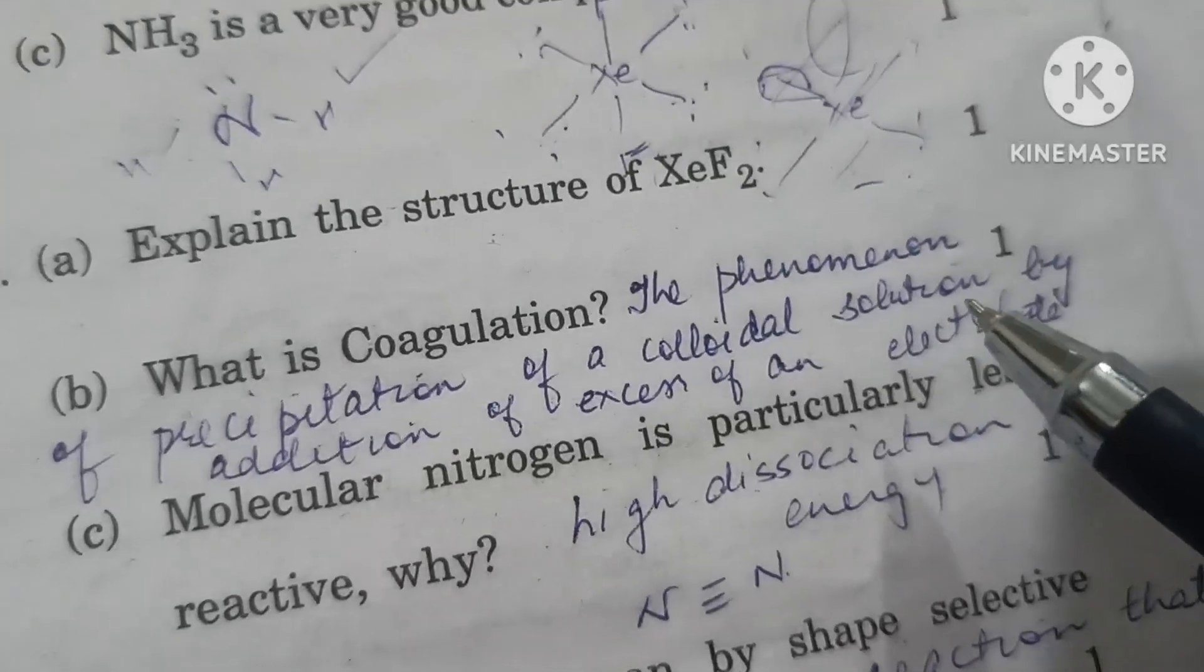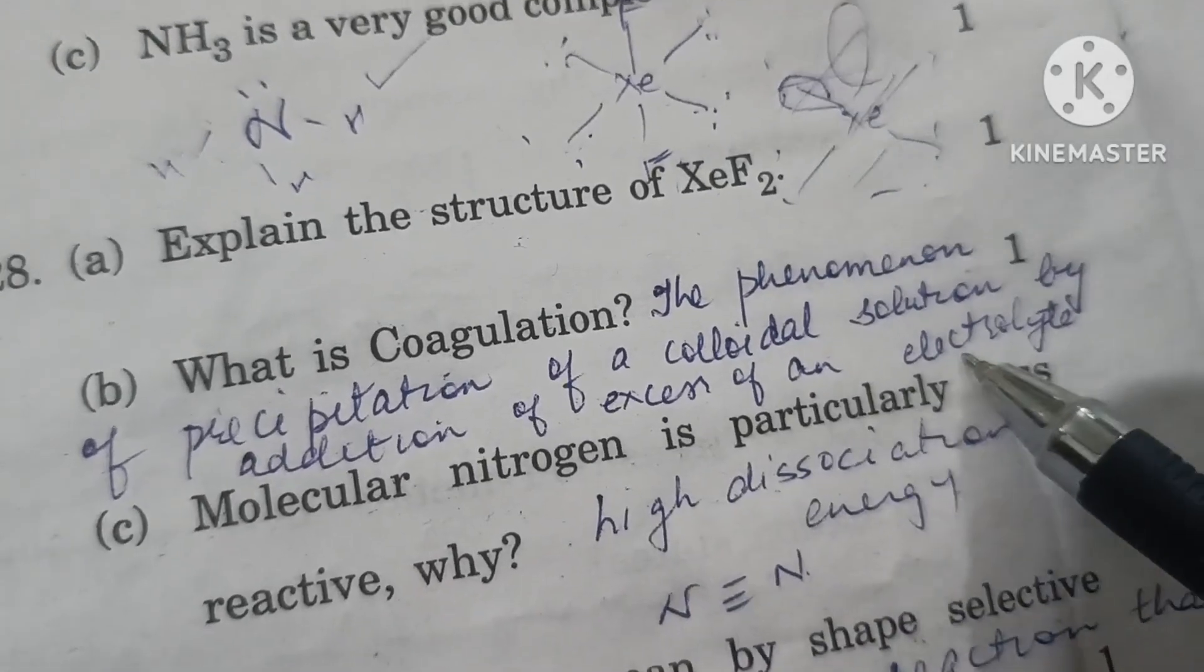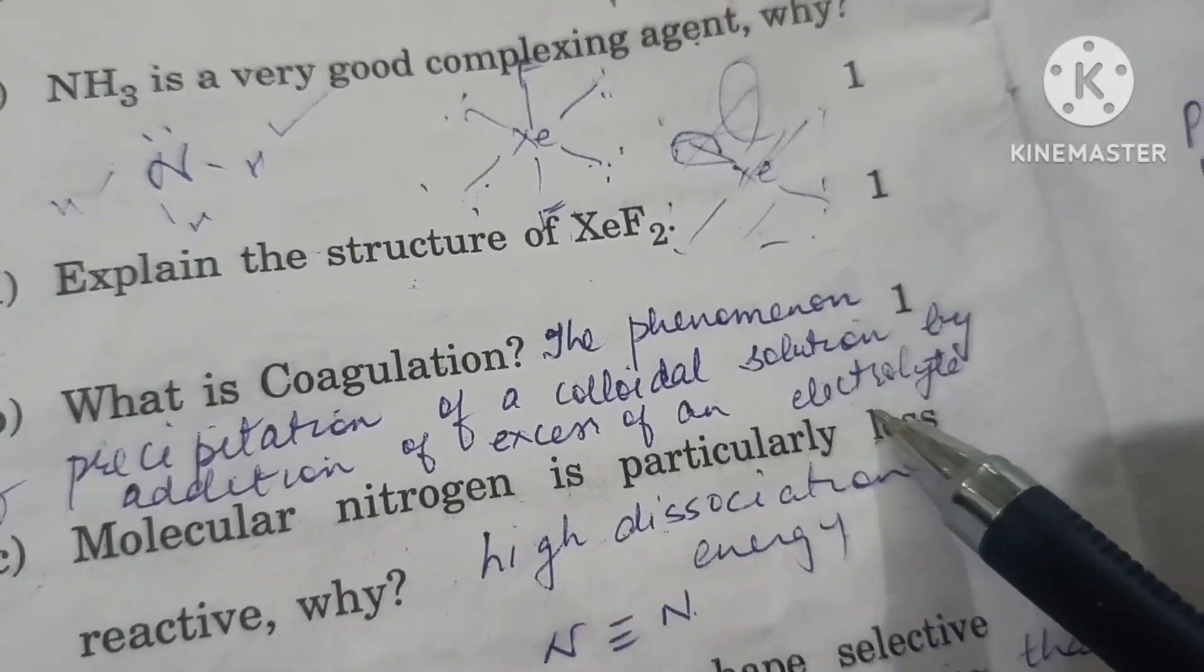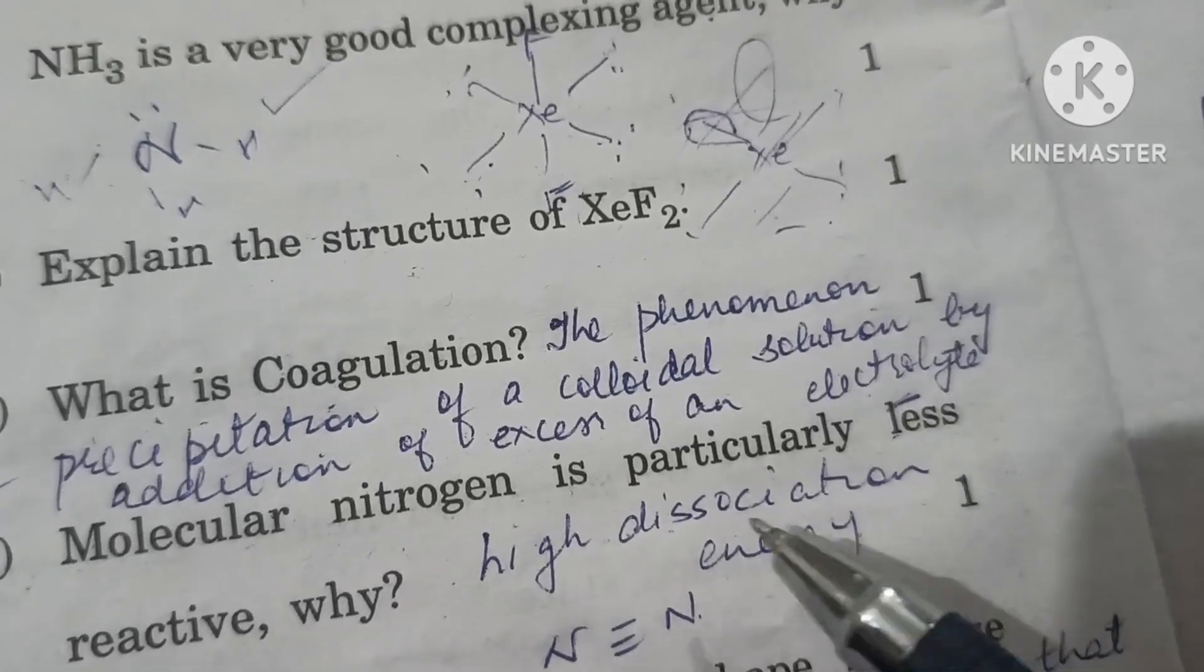What is coagulation? The phenomenon of precipitation of a colloidal solution on addition of excess electrolyte is called coagulation.